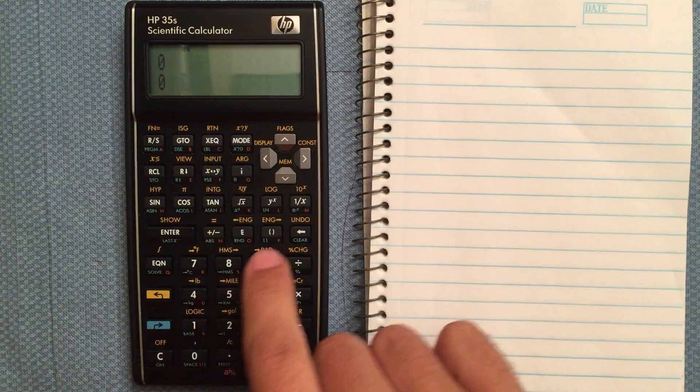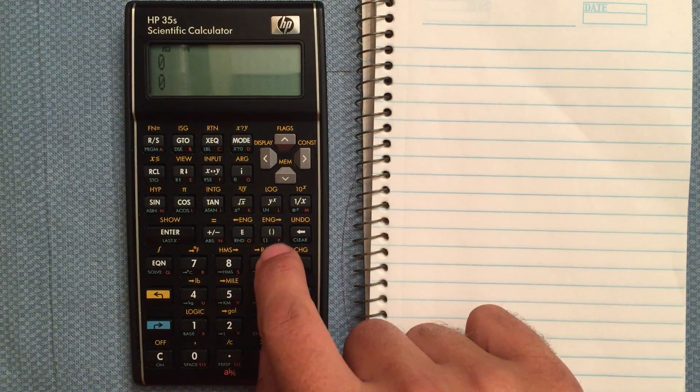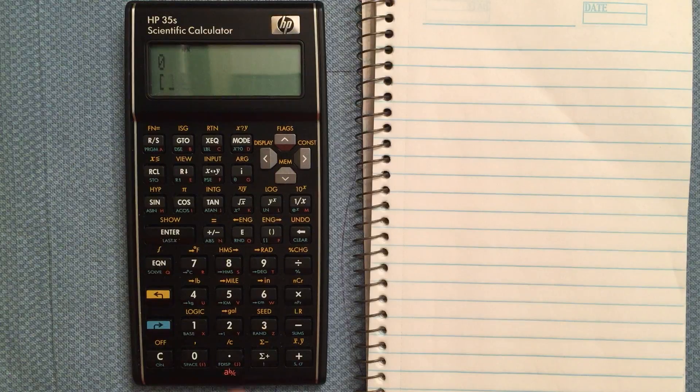To enter a vector, you put in the brackets, which is blue shift and then right here the brackets, and then you can start entering your vector.